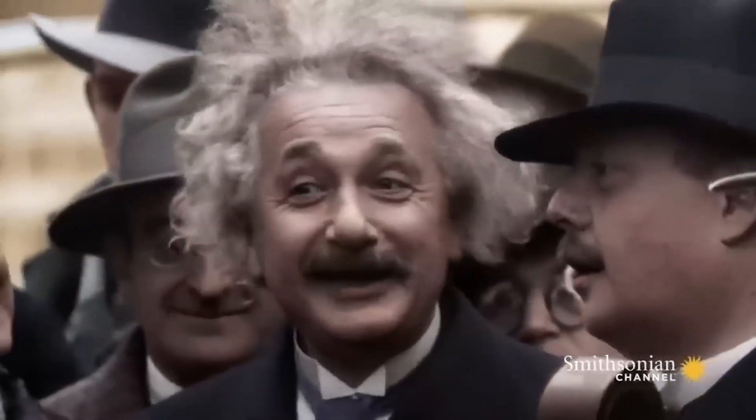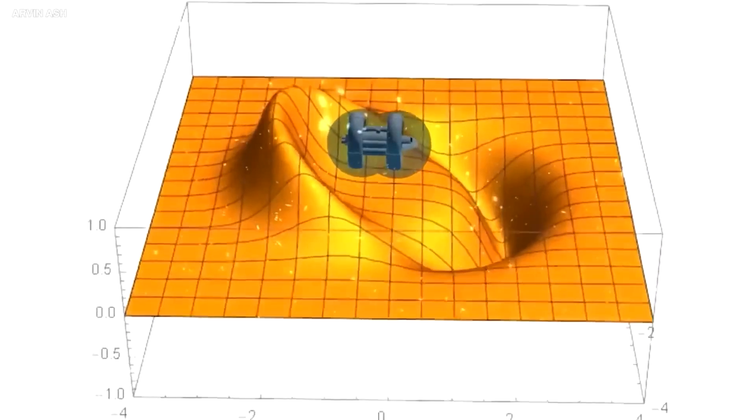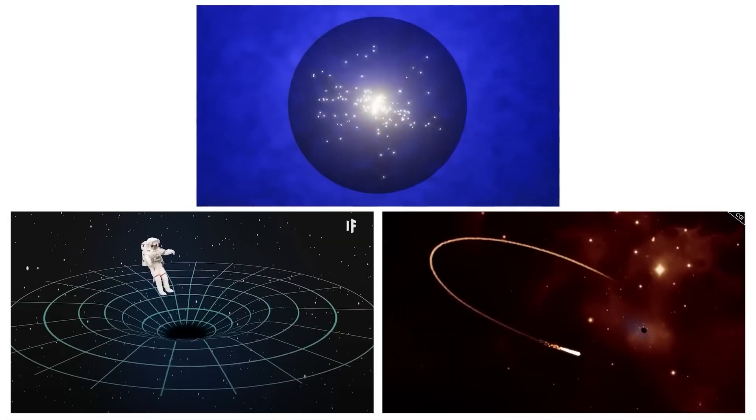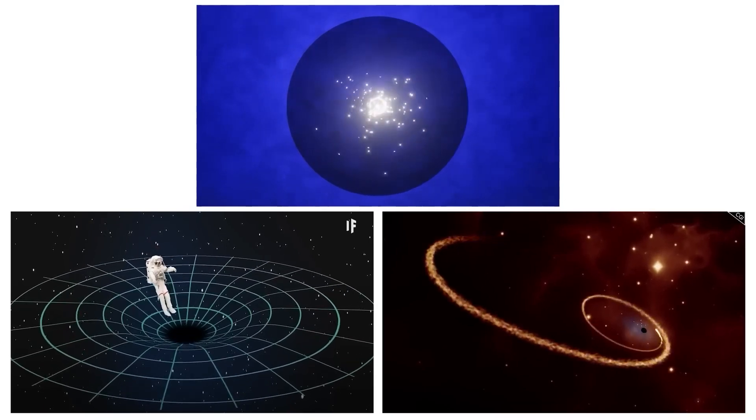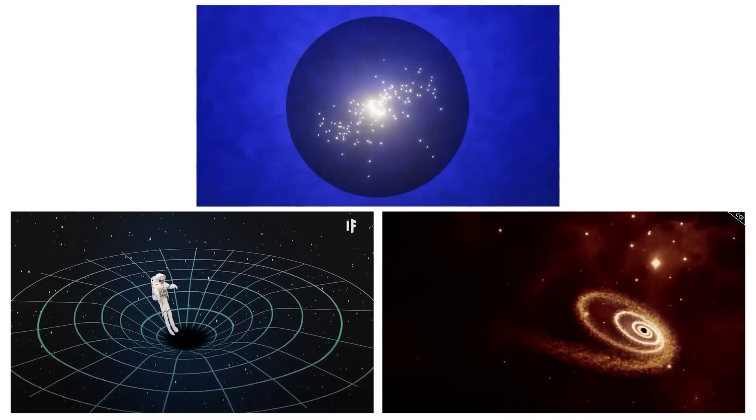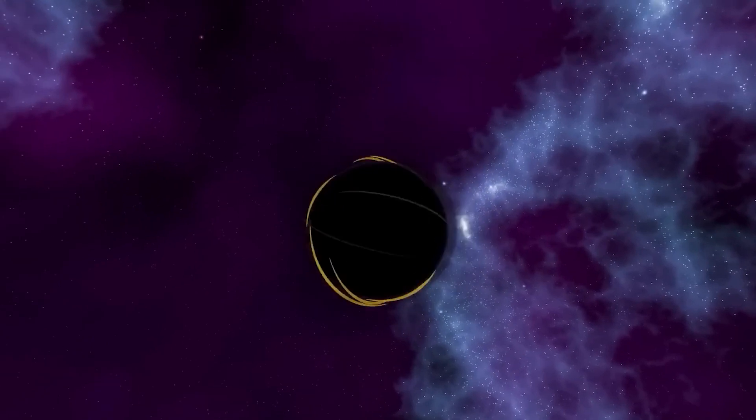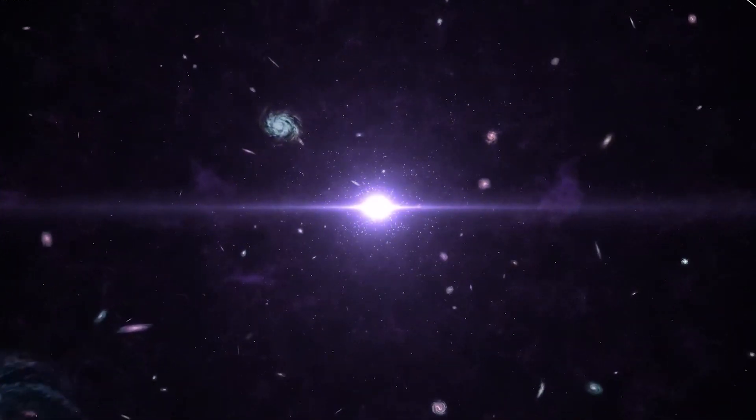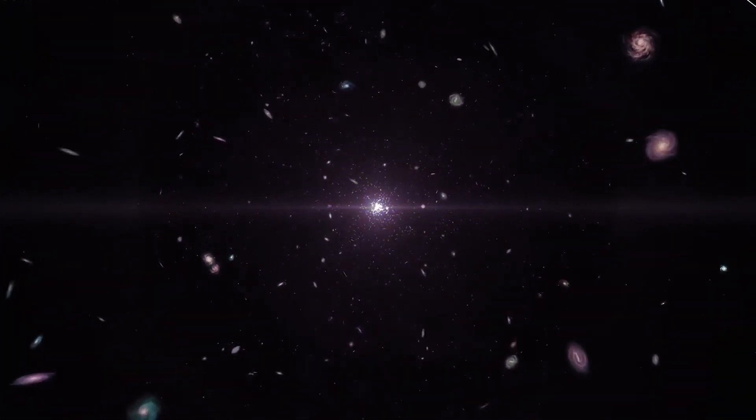Einstein's theory proposed that massive objects could bend and distort space and time. This was a revolutionary idea that challenged the traditional understanding of gravity. It also opened up the possibility of the existence of black holes and had important implications for how objects behave in the universe.